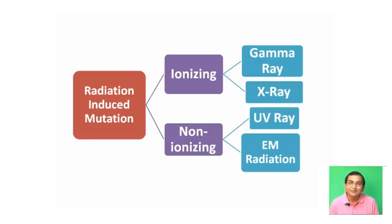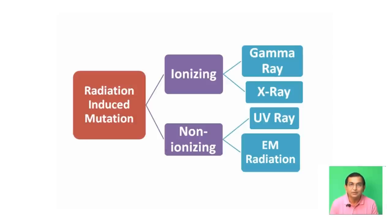On the other hand, non-ionizing radiations such as UV rays and electromagnetic radiations — including radiations emitted from cell phones and transmission towers — are also present in sunlight. These are non-ionizing radiations.